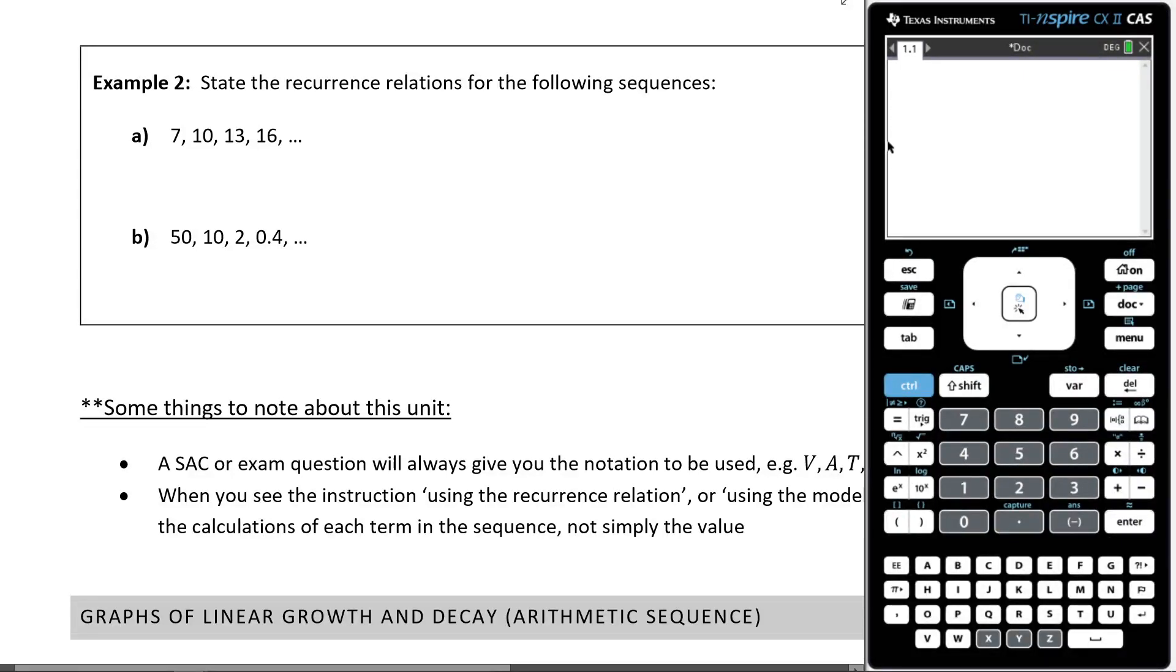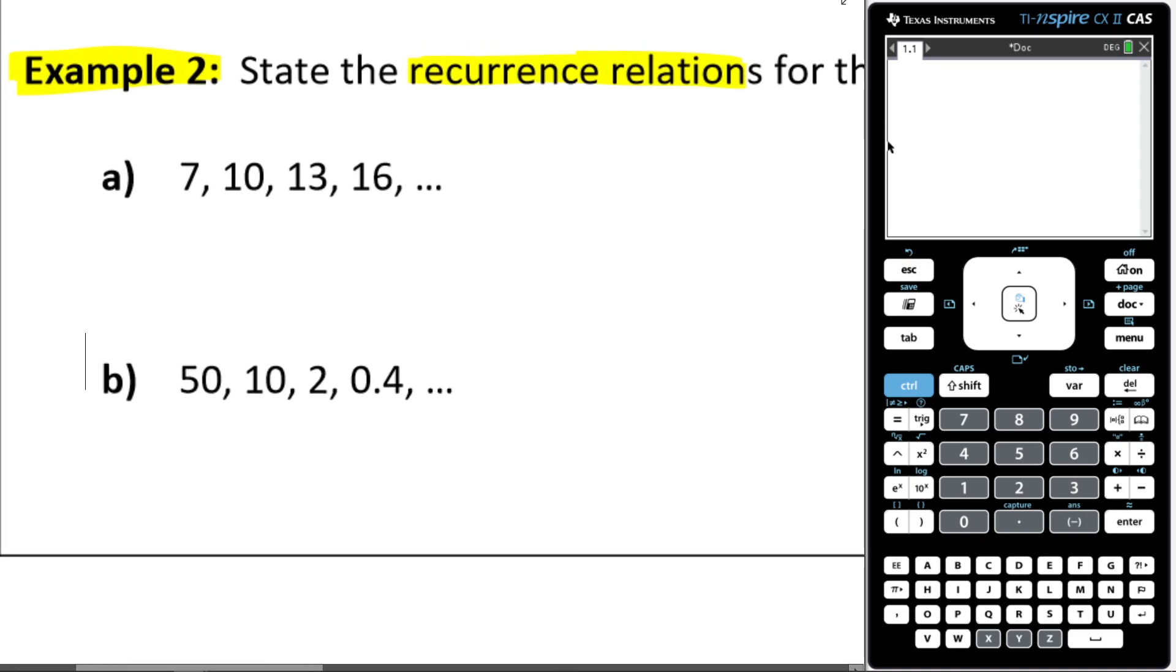All right, let us now work through example two. It says, state the recursion relations for the following sequences. So as you can see, they've given us the sequence and from the sequence, we need to figure out what the recursion relation is going to be. Let's look at our first example here.